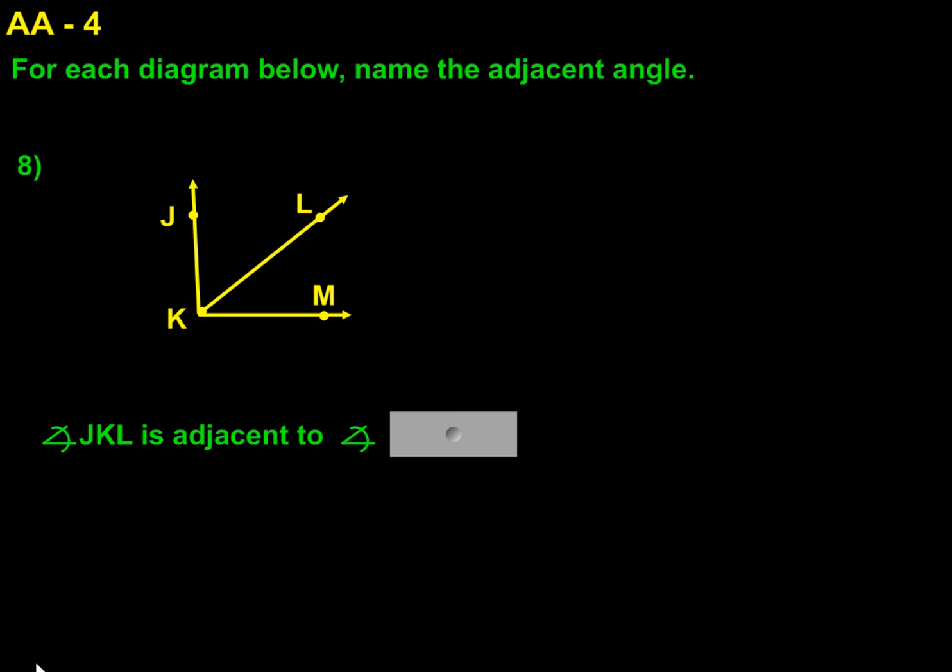And if we move on to number eight, we have angle JKL. And that is adjacent to angle LKM or MKL. Again, K is the vertex. So it has to be in the center, no matter which way you choose to list it.